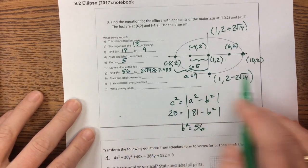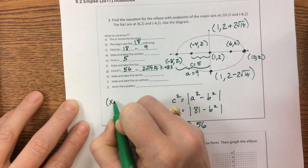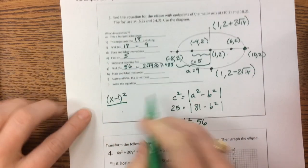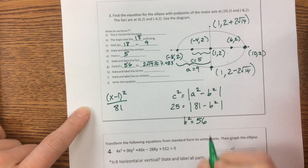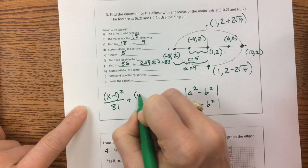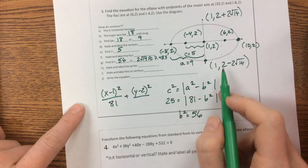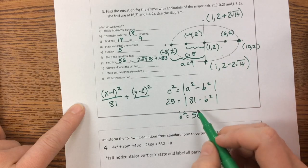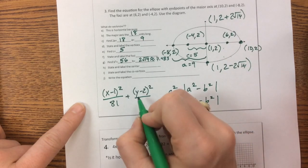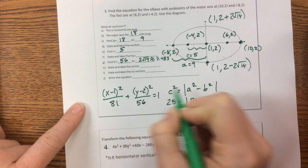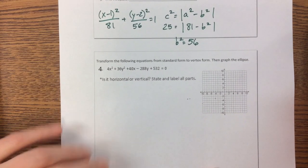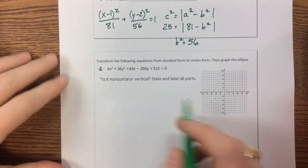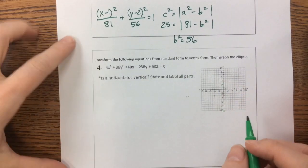To write the equation: the center is (1, 2), so we have x minus 1 squared over 81 — because we moved 9 units in the x direction — plus y minus 2 squared over 56 equals 1. That's the standard form equation of this ellipse.